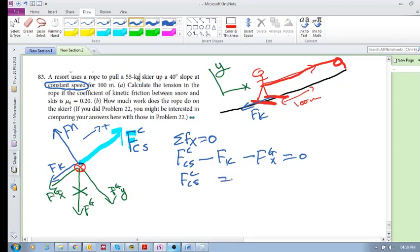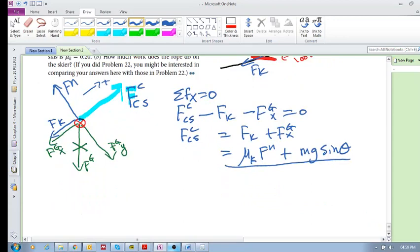What is kinetic friction? We know that it's mu_k times f_normal, plus we know that mg in the x direction is equal to mg sin theta. So there we've got it. We've got the expression for what we're looking for, but we don't have f_n.